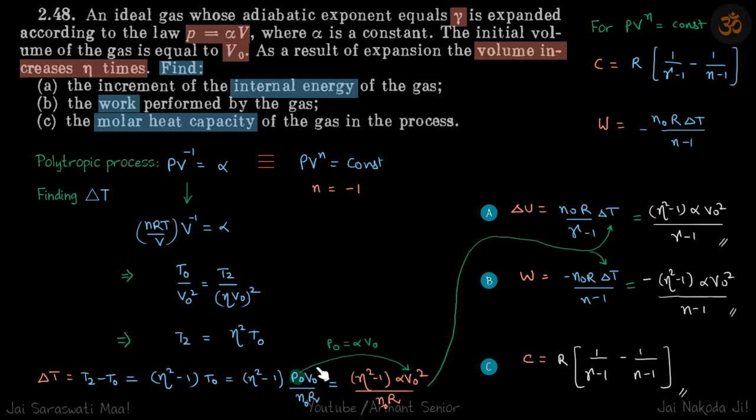So p is equal to alpha v, so p naught equals alpha v naught. So now we have got delta t in terms of everything that is known to us, so we'll put that value of delta t in these two parts and get our answers.